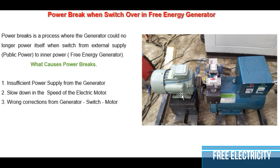The generator cannot supply another voltage because it receives its own supply from the electric motor — the electric motor is effectively the power source of the generator. So when there is a break in supply, the electric motor reduces its speed, which automatically affects the generator, and the generator cannot supply the required voltage to pull the electric motor back up to speed. That is why whenever you switch over from external to internal power supply, people have this issue.